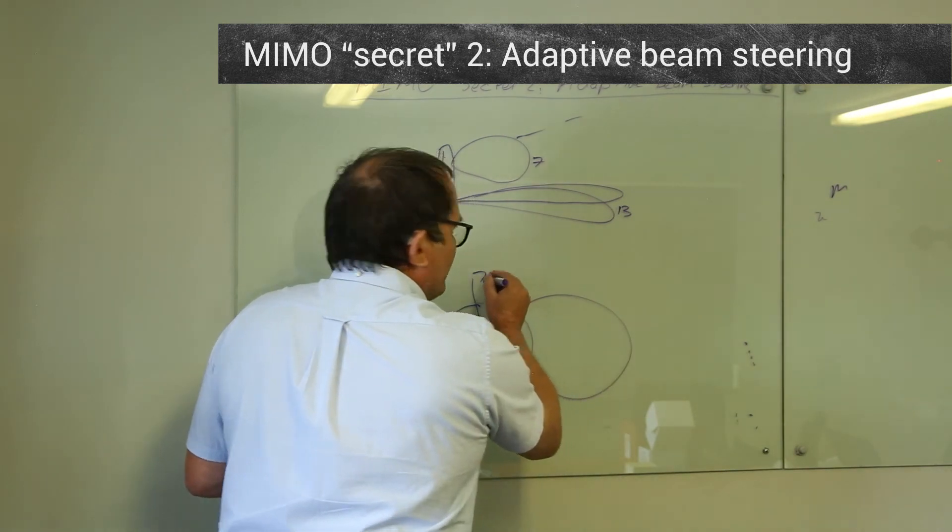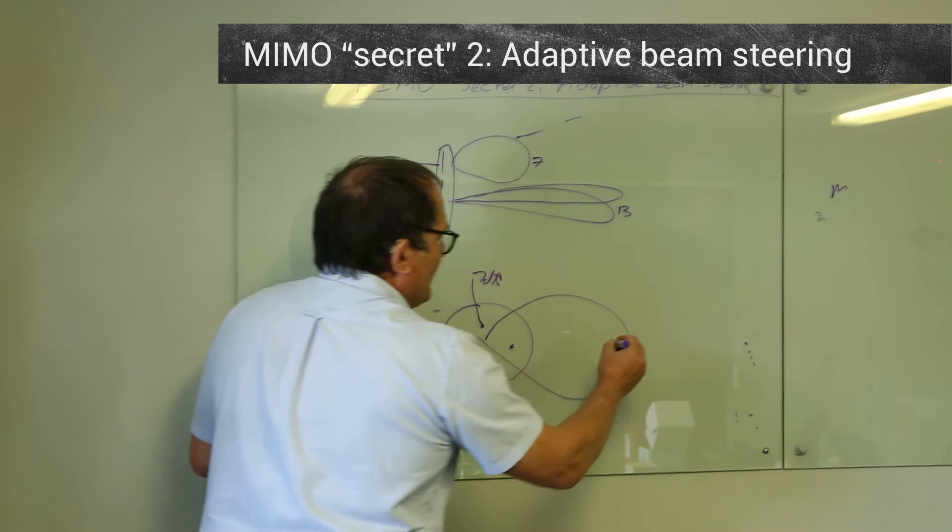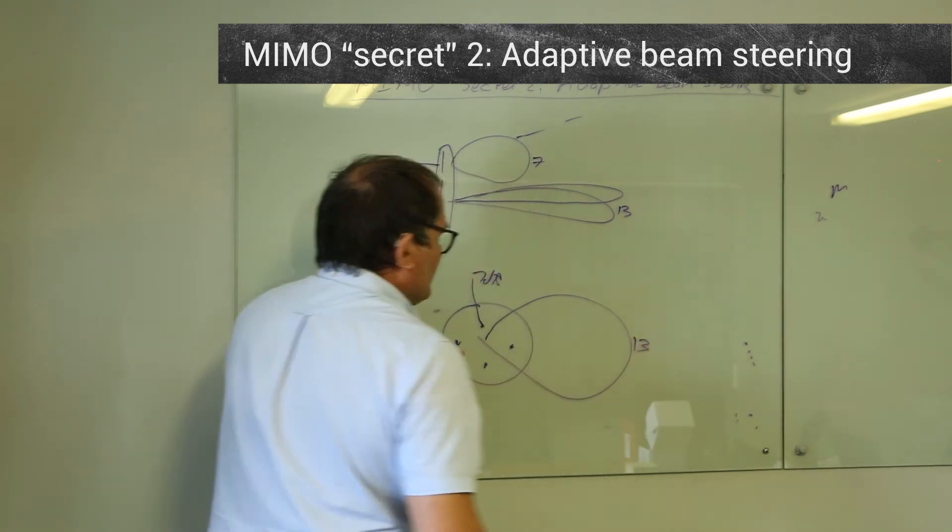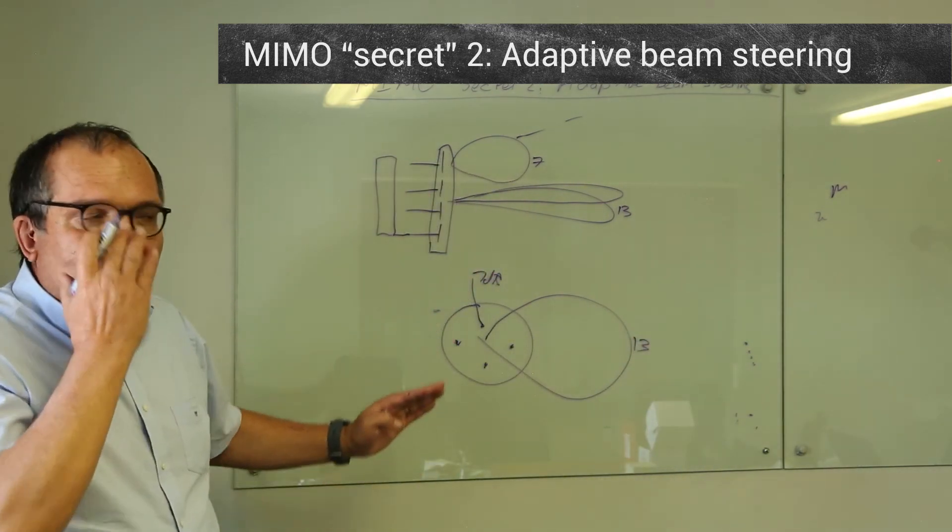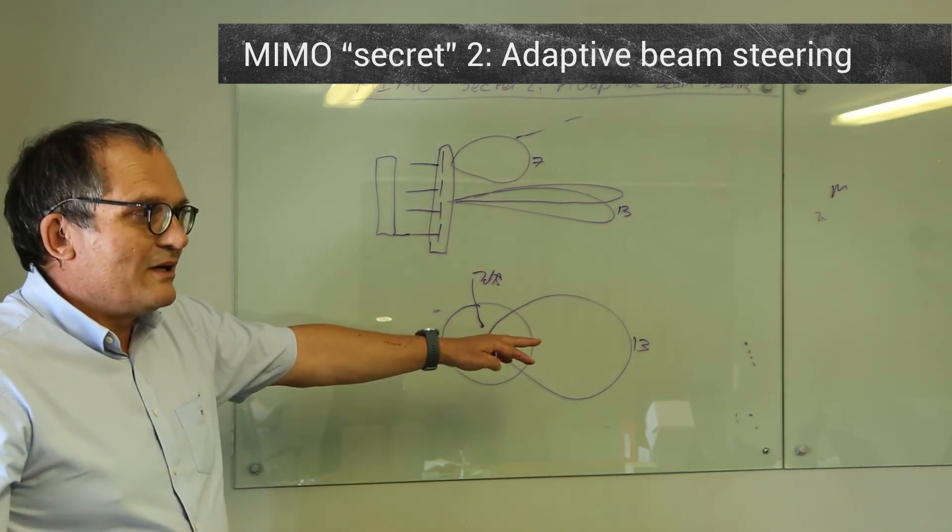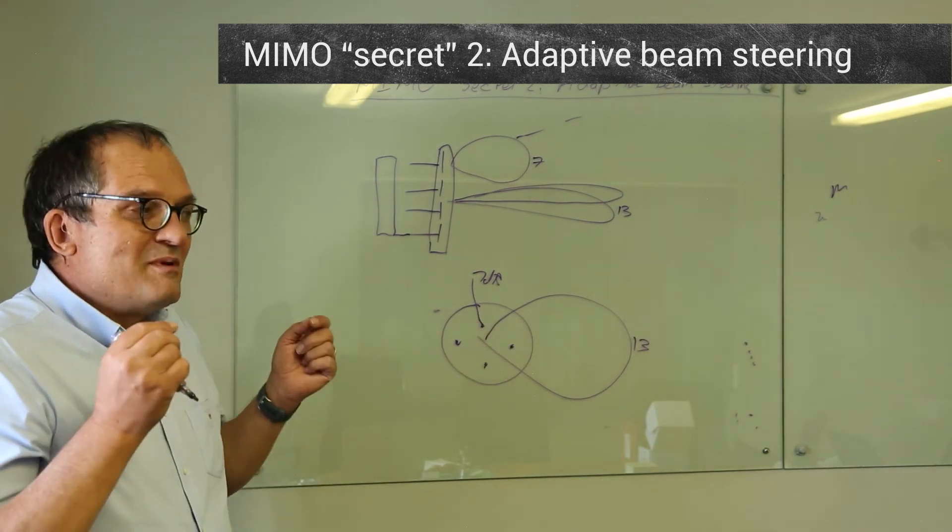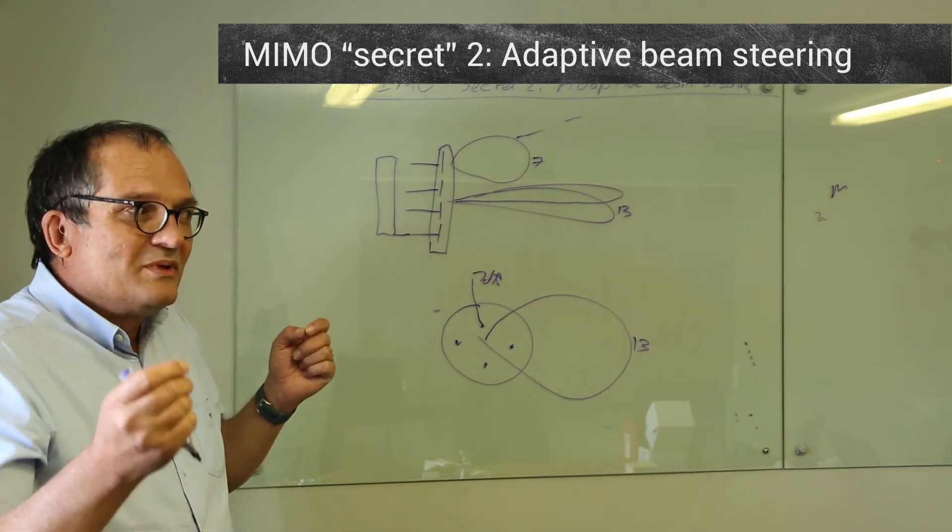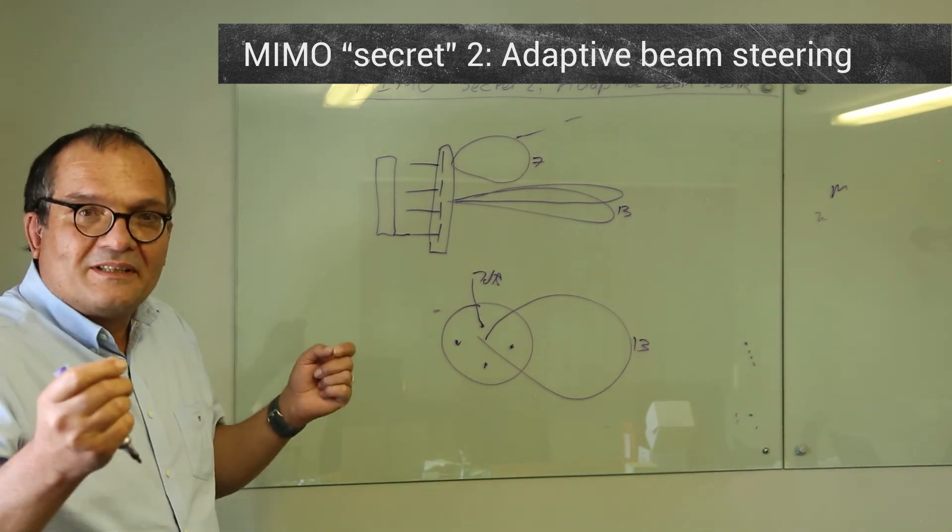So once again, instead of having seven dBi elements, this is going to, if it's not getting all of the other advantages of MIMO, give you 13 dBi. Remember that 6 dB more signal gives you a doubling of distance.